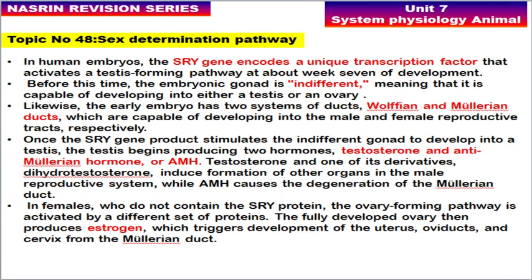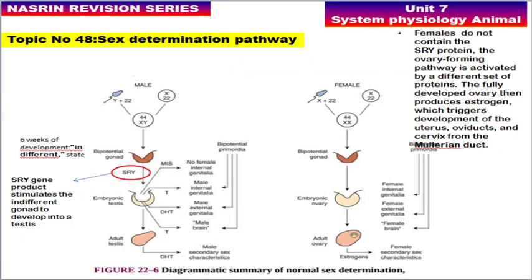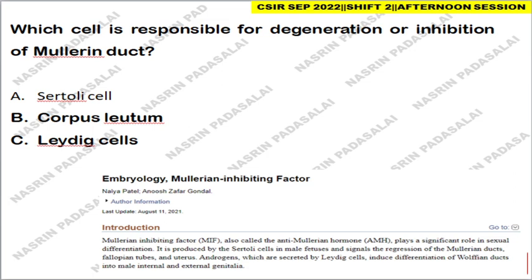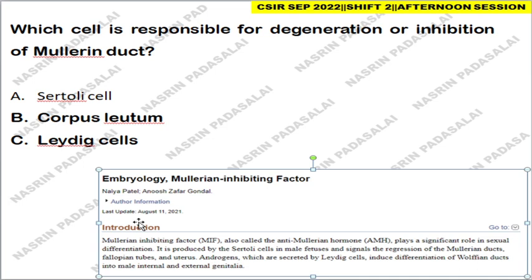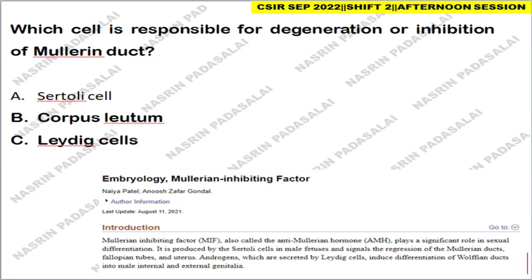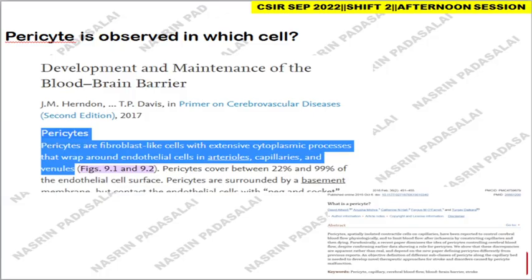The next question: which cell is responsible for degeneration or inhibition of the Müllerian duct? The Müllerian duct is degenerated by a hormone called anti-Müllerian hormone (AMH) or Müllerian inhibiting substance, secreted by the embryonic testis. Referring to an NLM journal, Müllerian inhibiting factor plays a significant role in sexual differentiation and is produced by Sertoli cells in the male fetus, signaling regression of the Müllerian duct. So the correct answer is Sertoli cells.